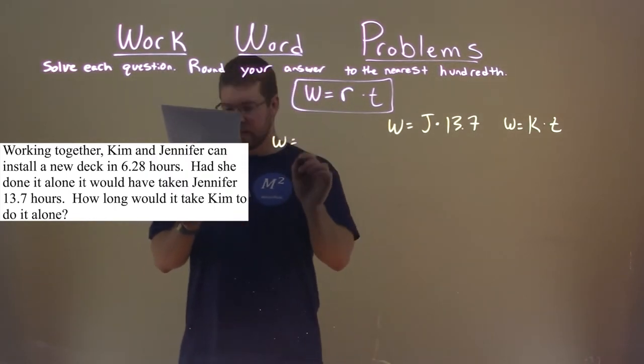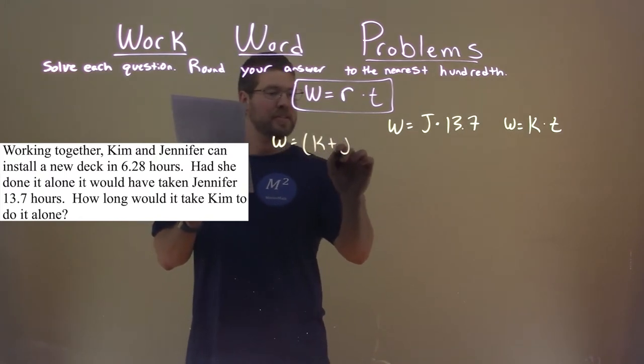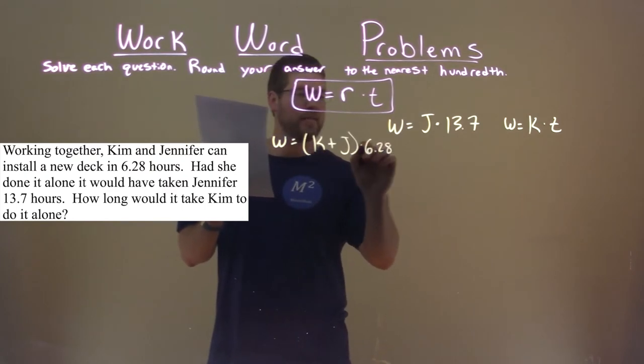So the work done of installing a deck is Kim's rate plus Jennifer's rate times a time of 6.28 hours.